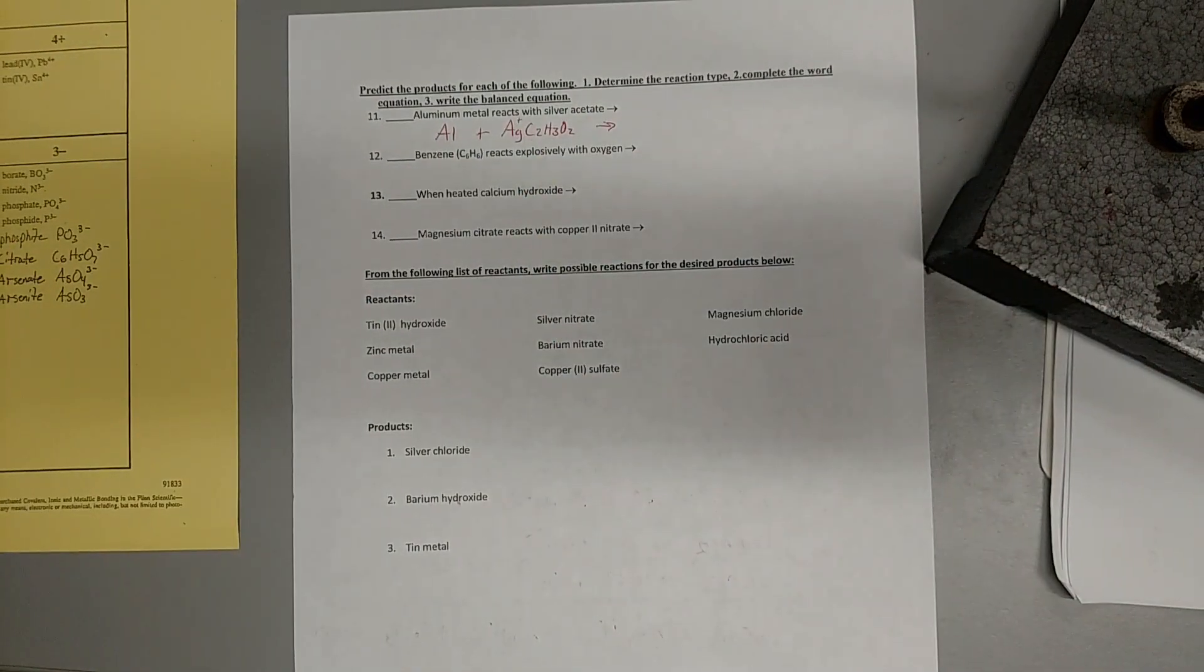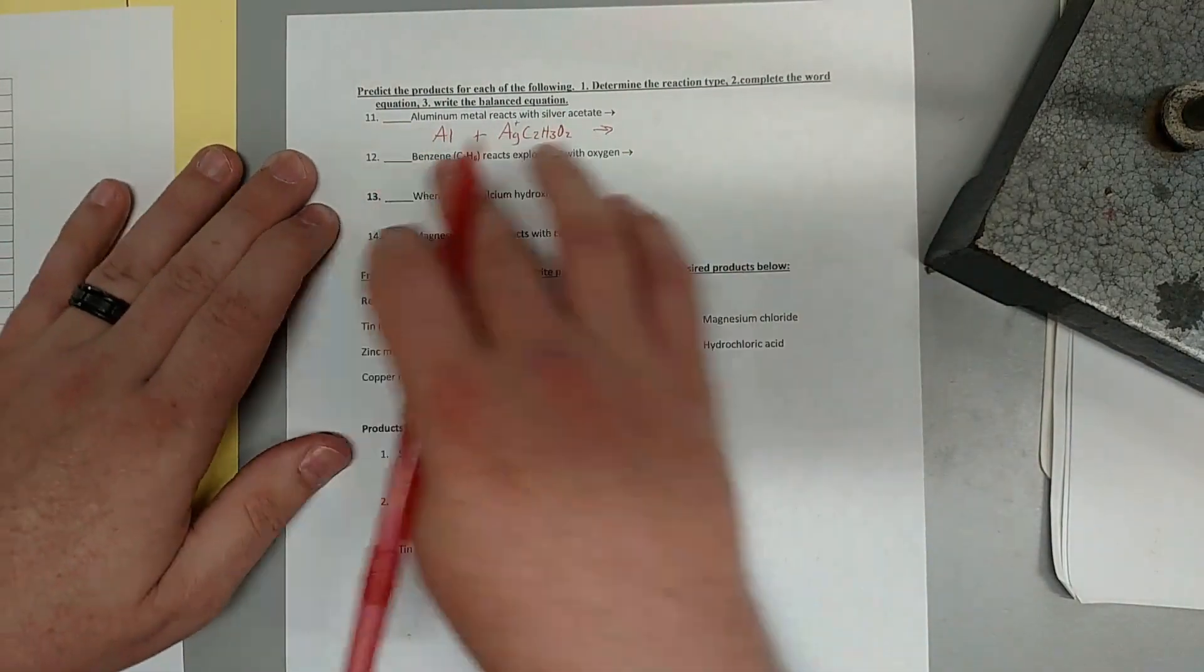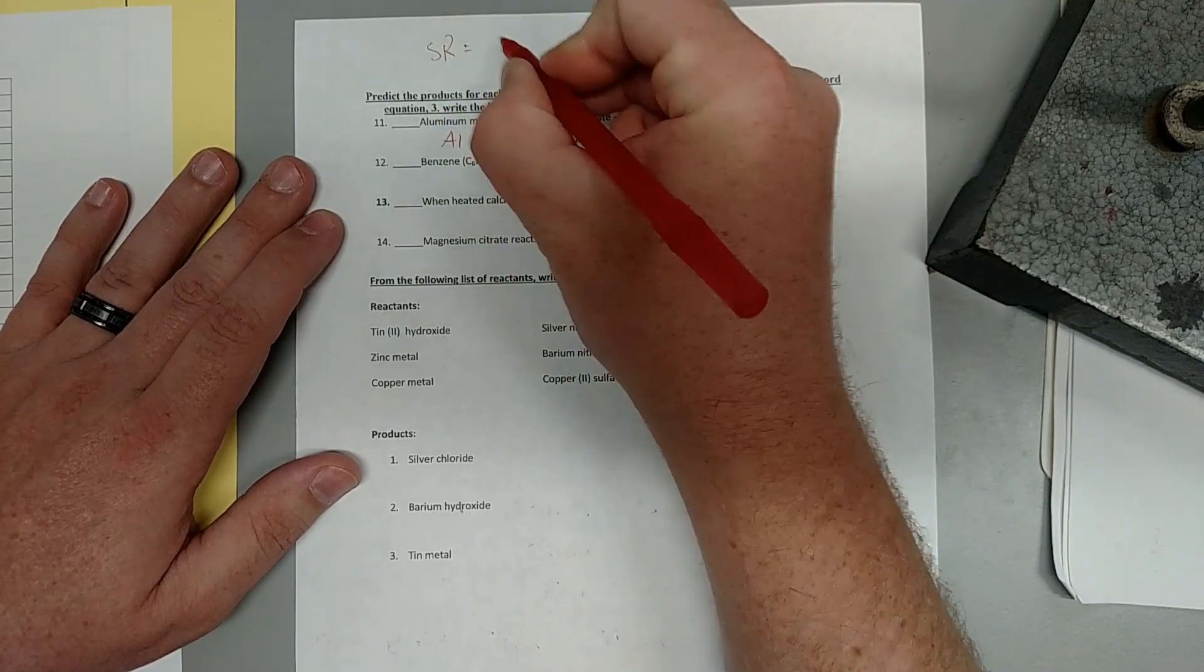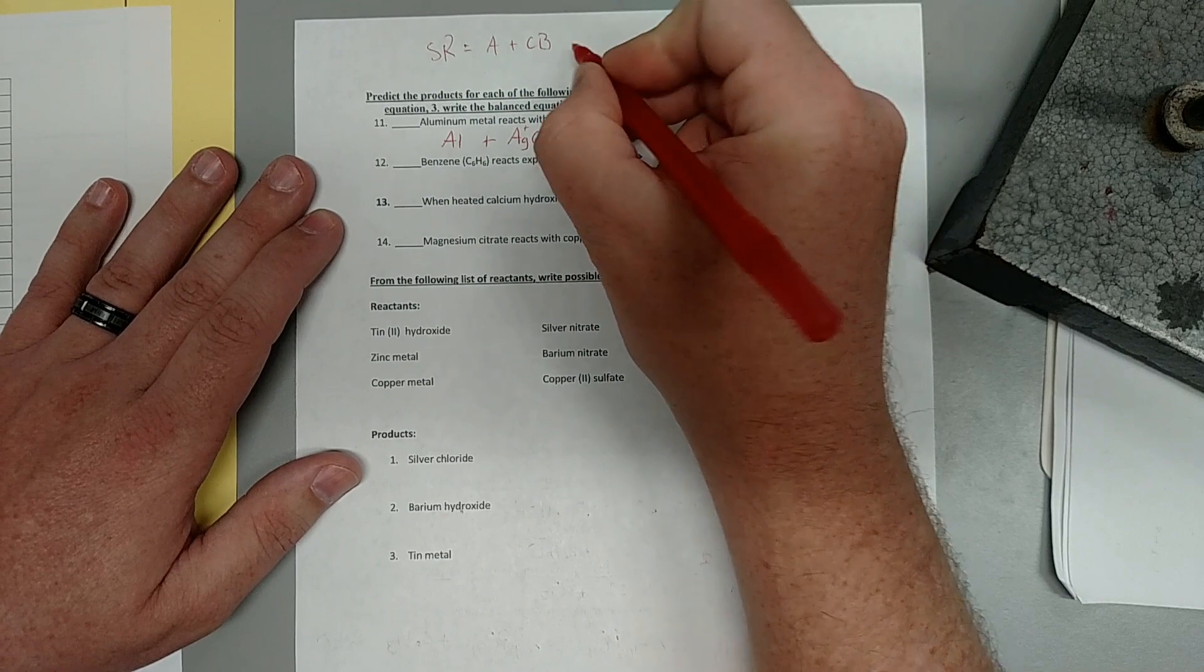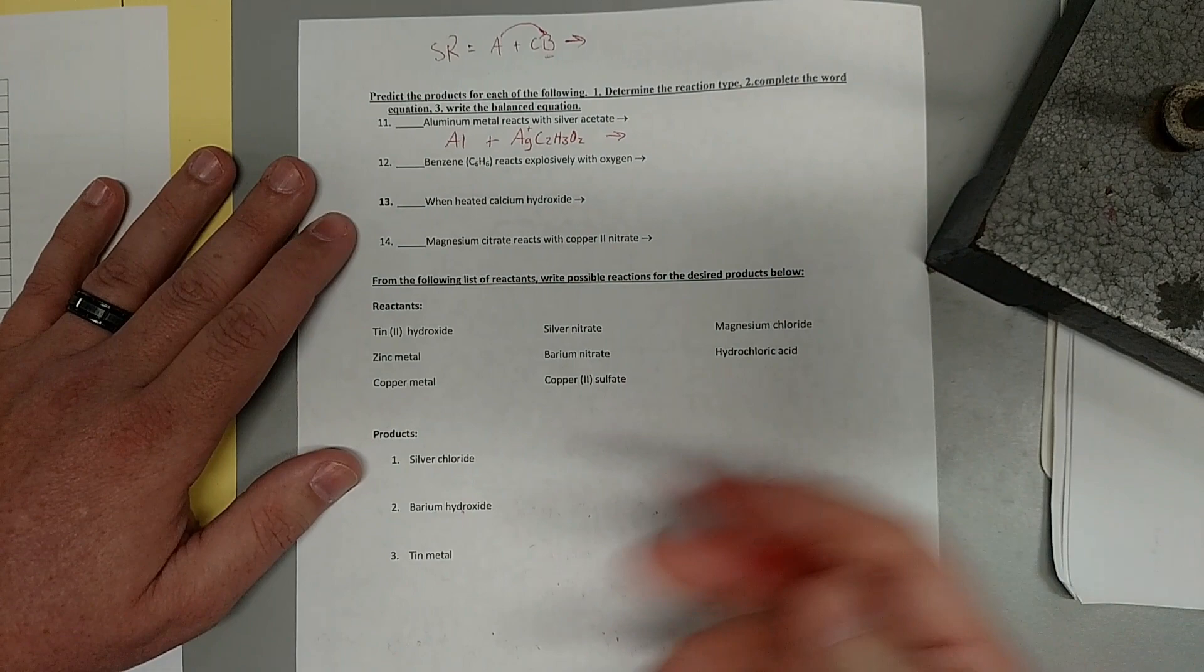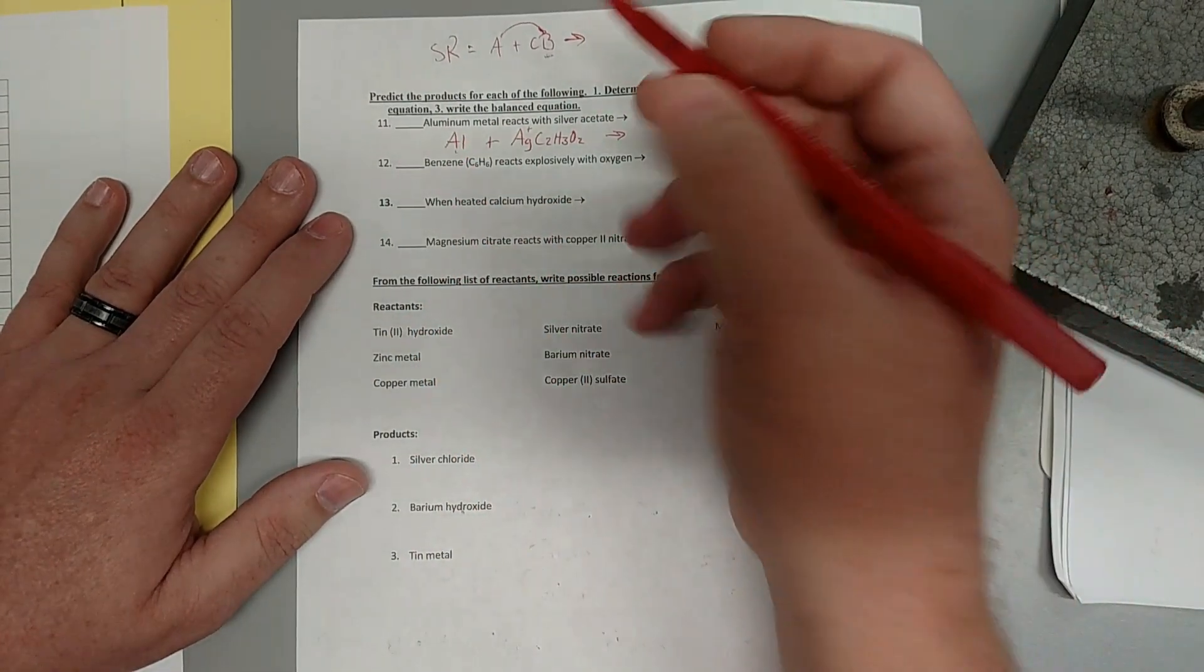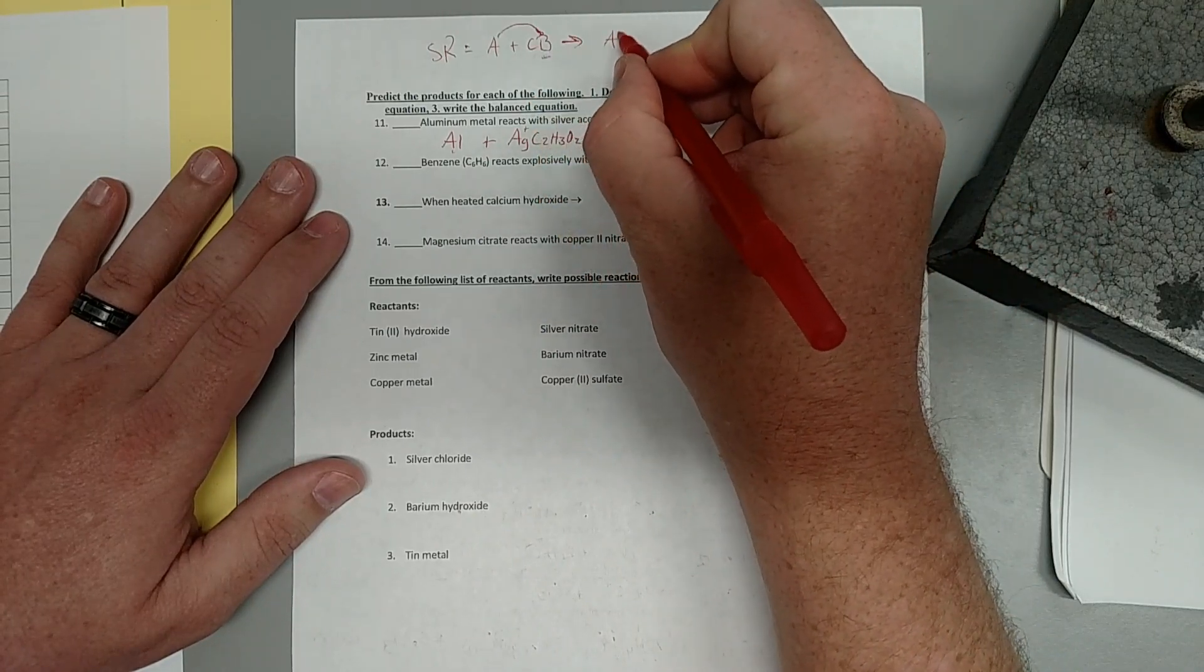So looking at our two reactants, we have to decide what type of reaction this is. So this is a single replacement reaction because in single replacement, we have some element reacting with some compound where the element is going to try and take away the anion or cation depending on what the element is from the other element. So this case will give us AB plus C.